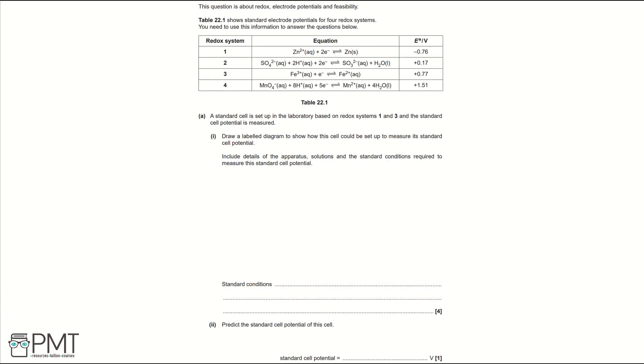This question is about redox, electrode potentials and feasibility. Table 22.1 shows standard electrode potentials for four redox systems. You need to use this information to answer the questions below. Part A.